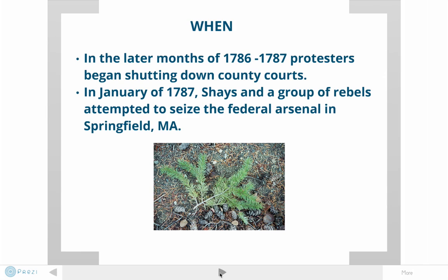In January 1787, Shays and a group of rebels attempted to seize the federal arsenal in Springfield, Massachusetts. The rebellion actually escalated beyond just closing down courthouses — the rebels were going to get all the weapons that belonged to the federal government. However, that attempt on the federal arsenal in Springfield was not successful. You can see here a hemlock branch, which is a symbol of the Revolution. Soldiers would put hemlock branches in their hats, and many of Daniel Shays' men who participated in this rebellion did the same, because they were Revolutionary War soldiers.